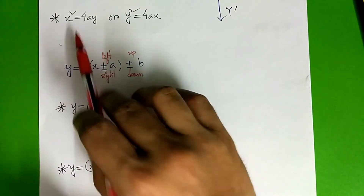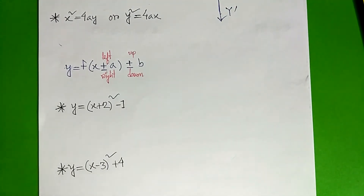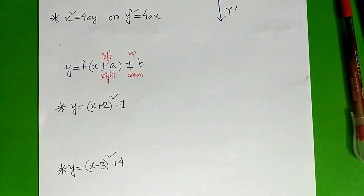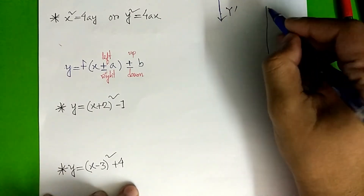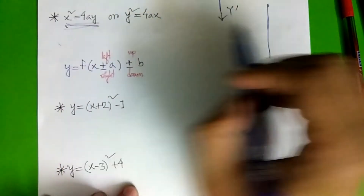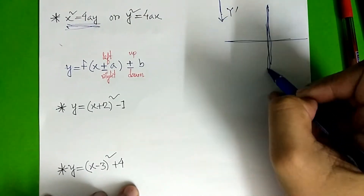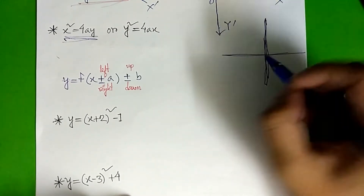Here we have x squared equal to 4ay, y squared equal to 4ax, in sketched form. Here we have a general form and here we have a sketched form.